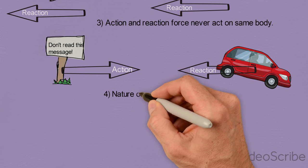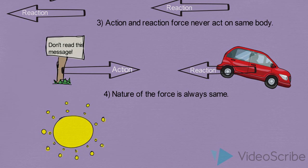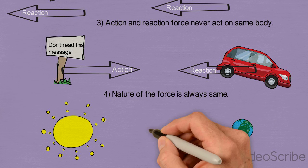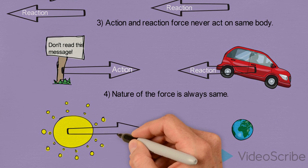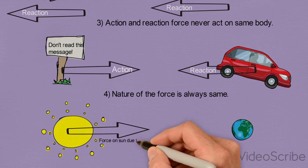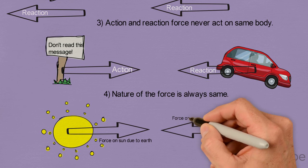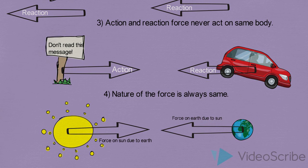The fourth point is: the nature of the forces is always the same. You cannot have a normal force as the action and a gravitational force as the reaction. For example, with the sun and earth — both are attracted toward each other by gravitational force. The force on the sun due to the earth and the force on the earth due to the sun are equal in magnitude, opposite in direction, acting on two different objects, and both are gravitational forces.